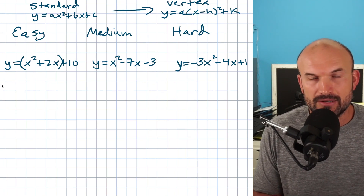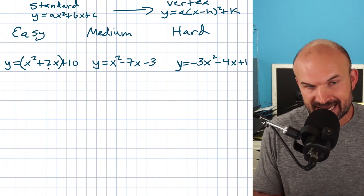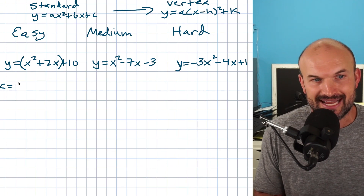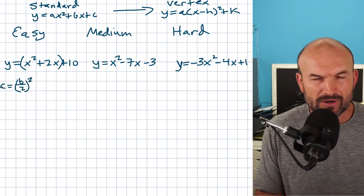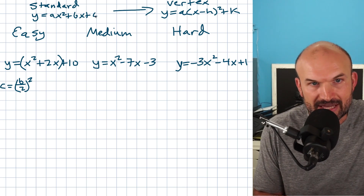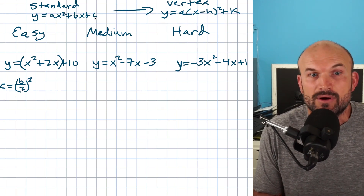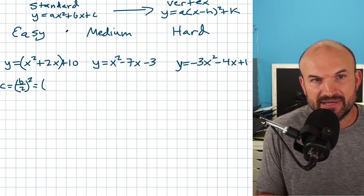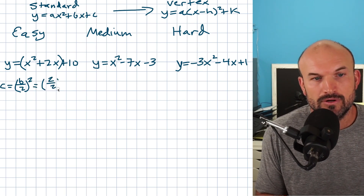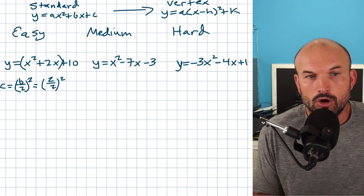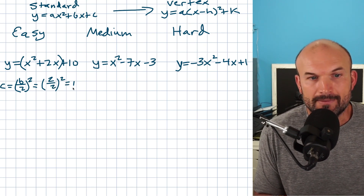How do we do that? We take our middle term, divide it by two, and square it — summarized as b divided by two, quantity squared. The b comes from standard form and represents our middle term. So we take two divided by two, which is one, and one squared is just one — that's our value c.